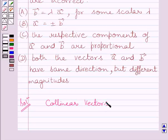Now, two or more vectors are said to be collinear if they are parallel to the same line, irrespective of their magnitudes and directions.